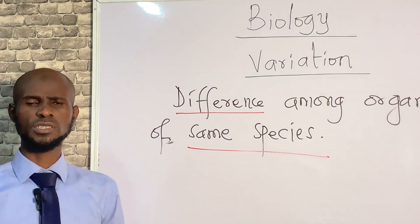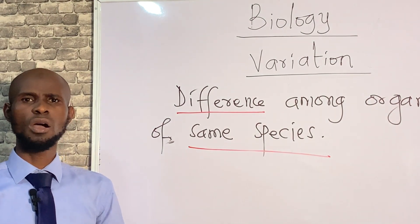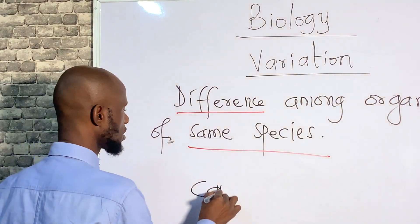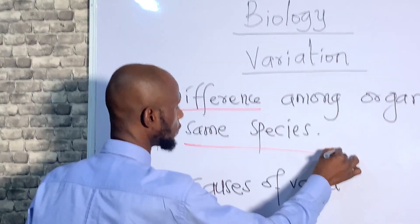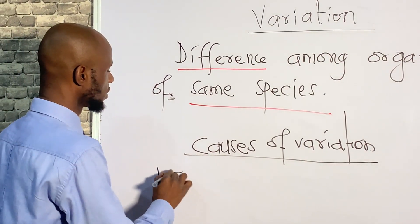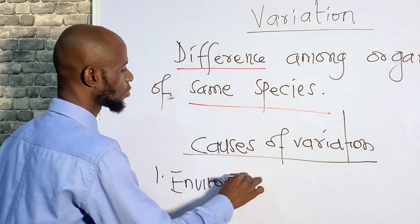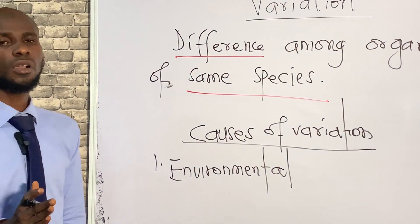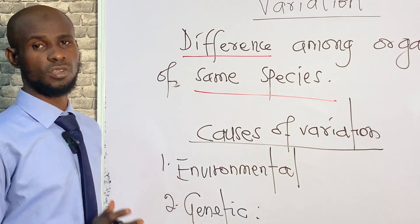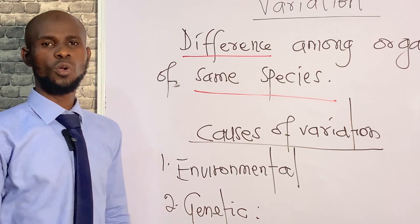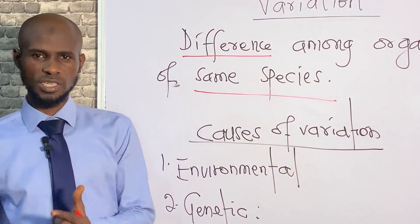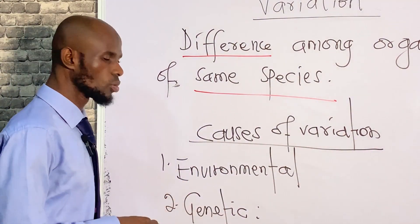Now we have the causes or sources of variation — the things that make organisms of the same kind look different from one another. There are two broad causes of variation. The first cause is the interaction of an organism with the environment; we call this environmental cause or environmental variation. The second one is genetic cause of variation — that is how we transfer traits from parent to offspring. In the process of transferring traits, the offspring will differ from the parent.